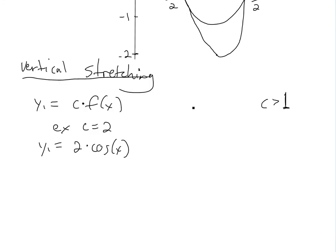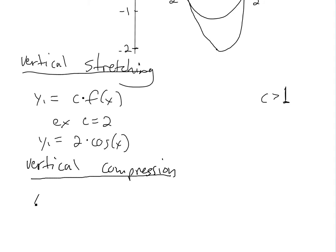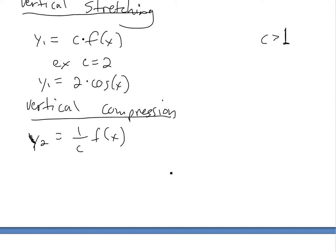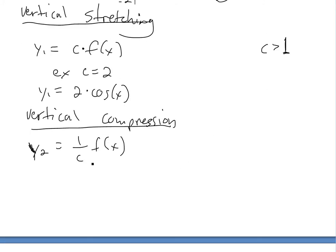So now let's say we want to compress it — vertical compression. We're going to do y2 equals 1 divided by c times f of x, where c is greater than 1. For example, with c equals 2, so let's go 1 over 2 cos x.